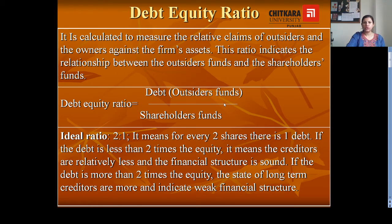Debt equity ratio establishes the relationship between debt and equity. Debt means long-term loans of the organization, and equity means shareholders' funds. This ratio indicates the relationship between outsider funds and shareholder funds. Major examples of long-term loans are bank loans, loans from financial institutions, debentures, and public deposits. These items would be available in the balance sheet.